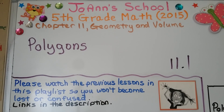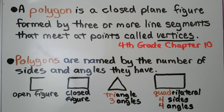We're in a new chapter about geometry and volume. This is 11.1 and we're going to talk about polygons. A polygon is a closed plane figure formed by three or more line segments that meet at points called vertices. We learned about those originally in fourth grade math chapter 10, but I'll link that in the description if you need it.